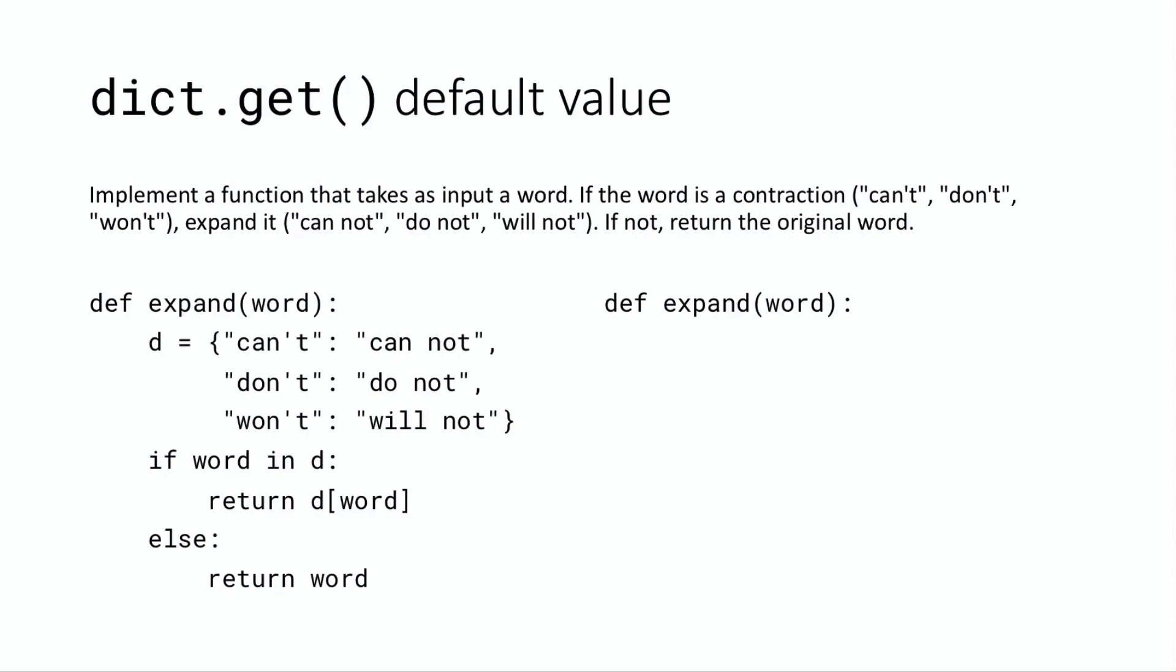So here's how it works. We want to implement a function that takes as input a word. If the word is a contraction like can't, don't, or won't, we want to expand it. Cannot, do not, or will not. And otherwise we want to return the original word.